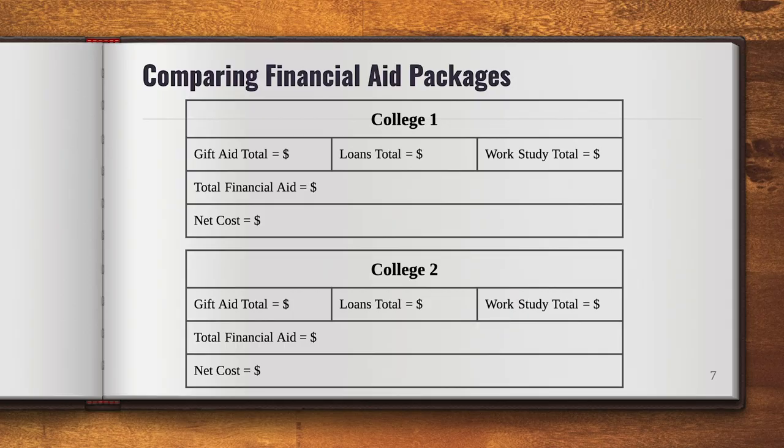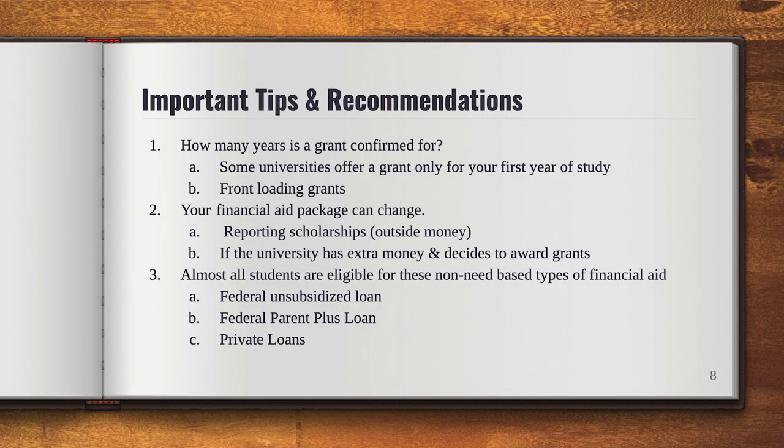Now that you've done all of this work for one school, you're going to have to do it for all of the schools you've been accepted to, because each school gives you a unique financial aid package. Some schools give you more grants; others offer more loans. To compare financial aid packages, I recommend you not only look at the total financial aid amount but also at the types of aid. For example, one school might offer $30,000 total but $20,000 in loans and $10,000 in gift aid, while another school also offers $30,000 but only $10,000 in loans and $20,000 in gift aid. It's not just the total — it's also which school gives you money you don't have to pay back.